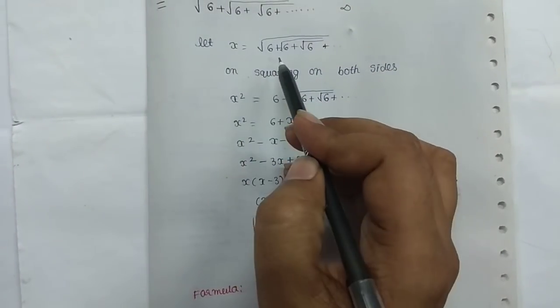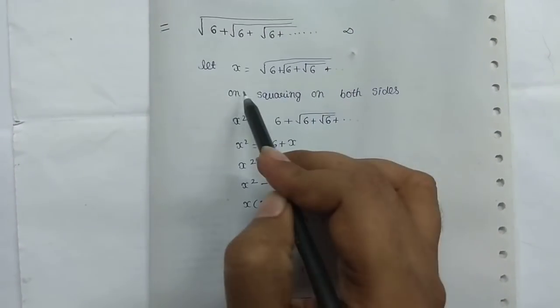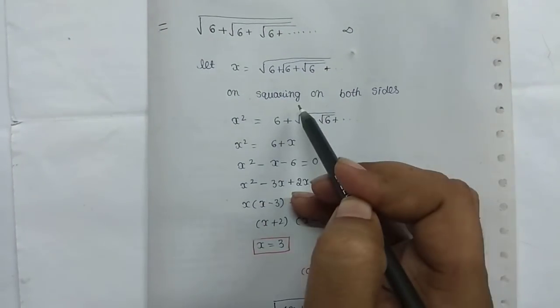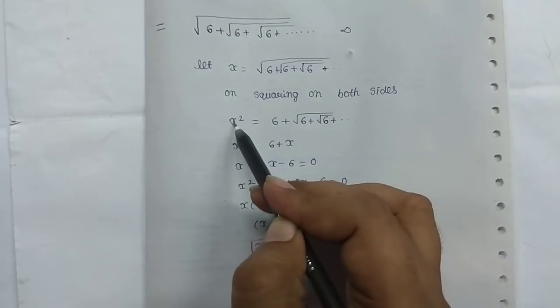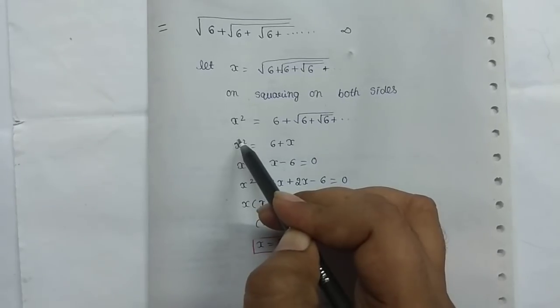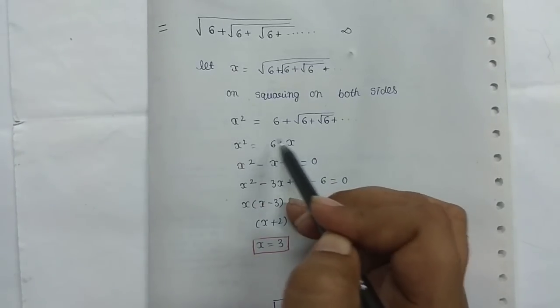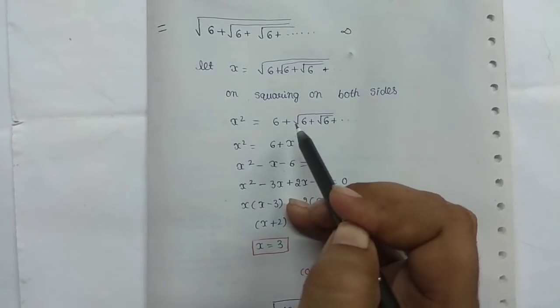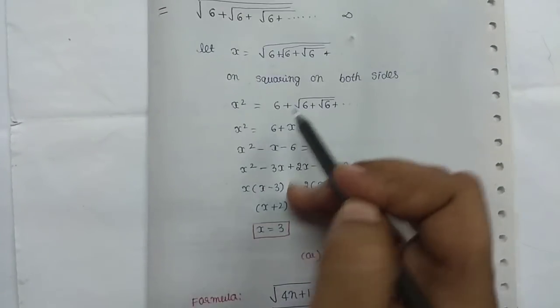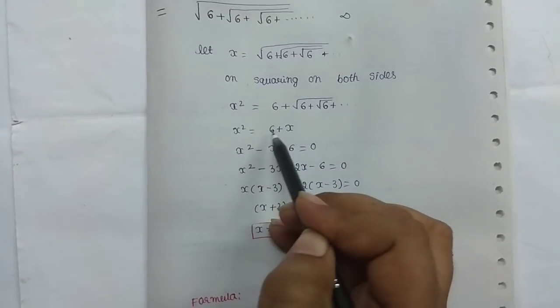Let's define x as the expression and square both sides. So, x squared is equal to 6 plus x. Let's solve this equation.